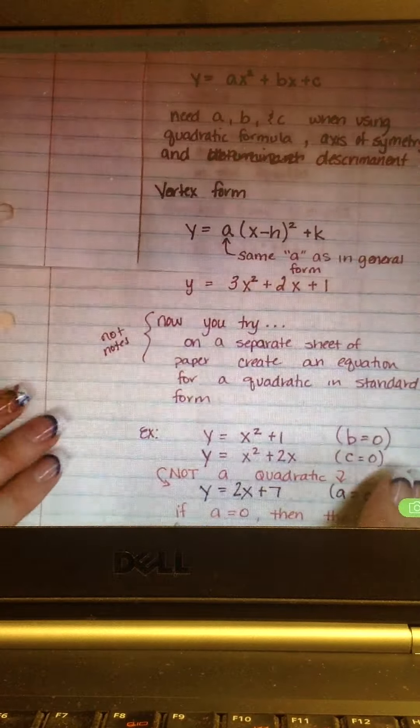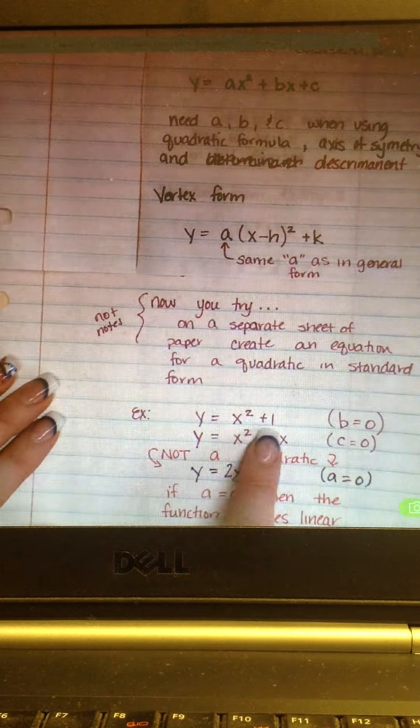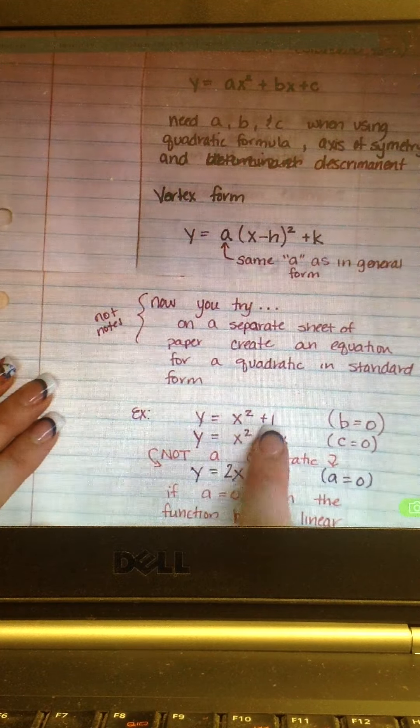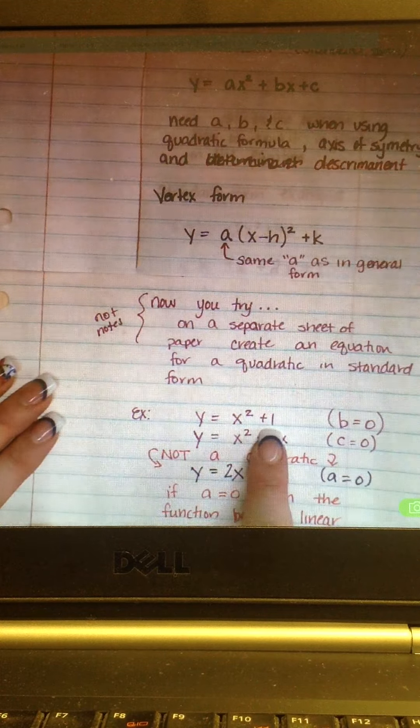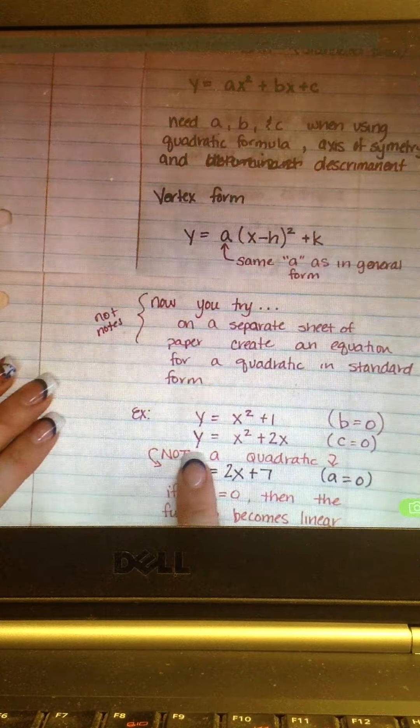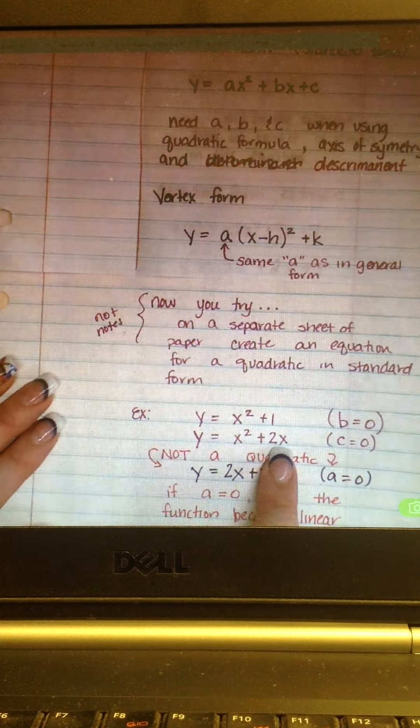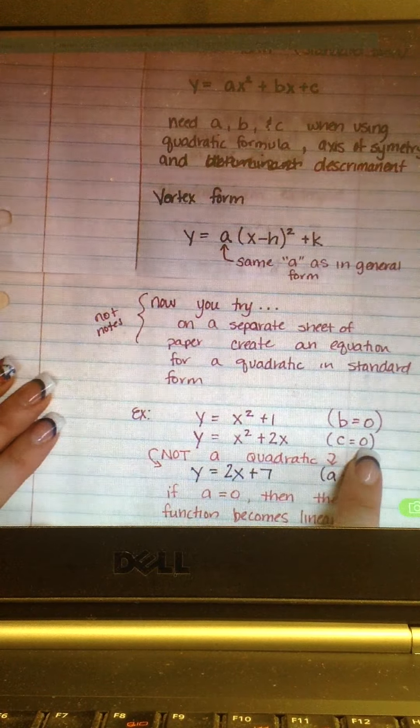After you get done with that, just some other little notes about standard form. You can have it without the B value. So, x squared plus 1, even though it doesn't have 3 pieces to it, this is still in standard form. It's just your B equals 0. Same thing here. Y equals x squared plus 2x. Still in standard form. I just don't have an extra constant out here. That means that constant equals 0.